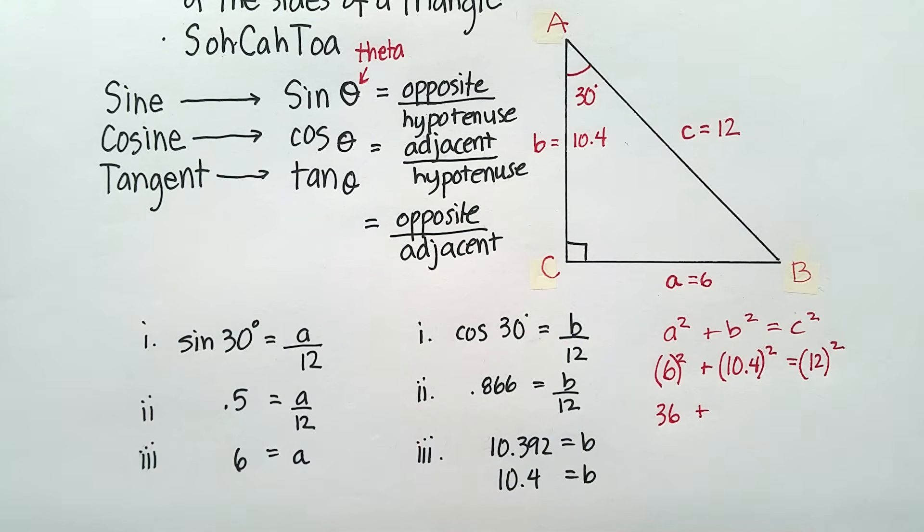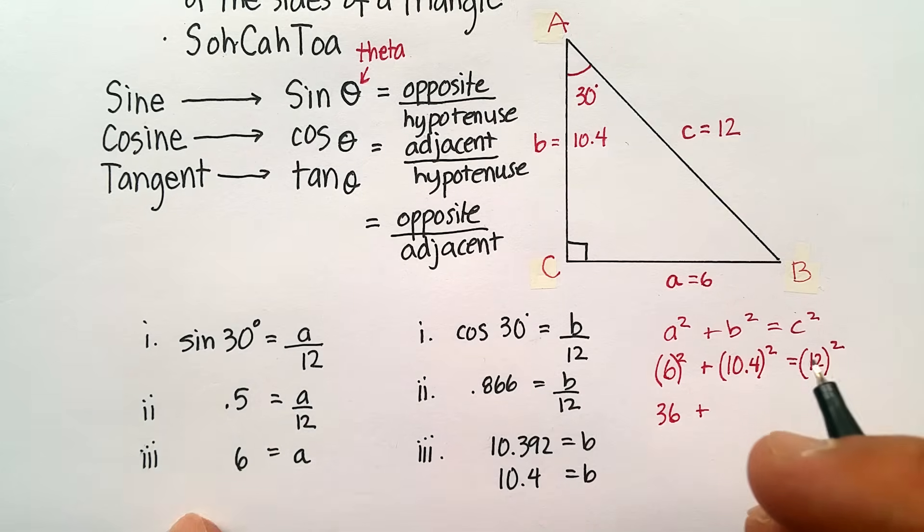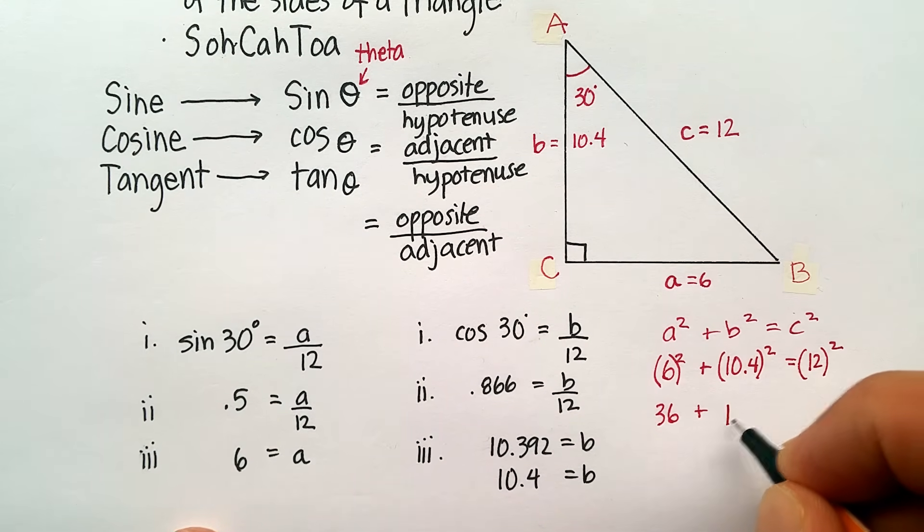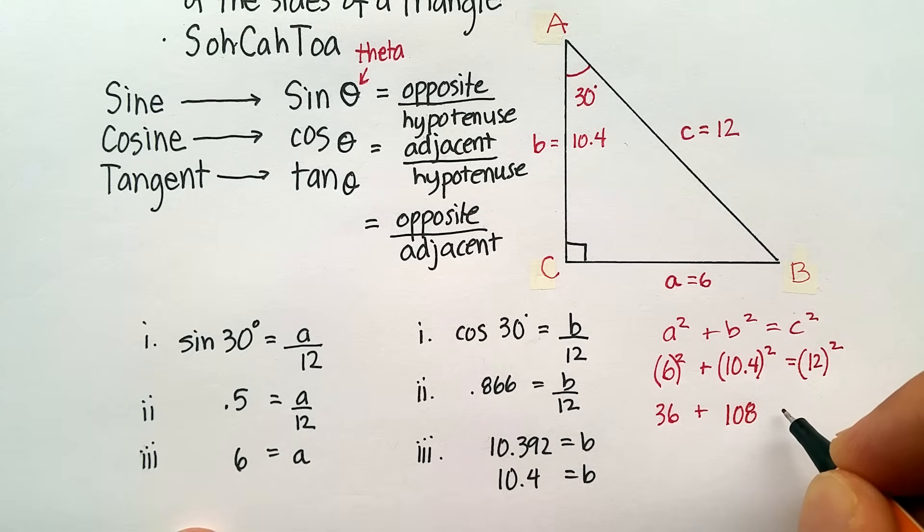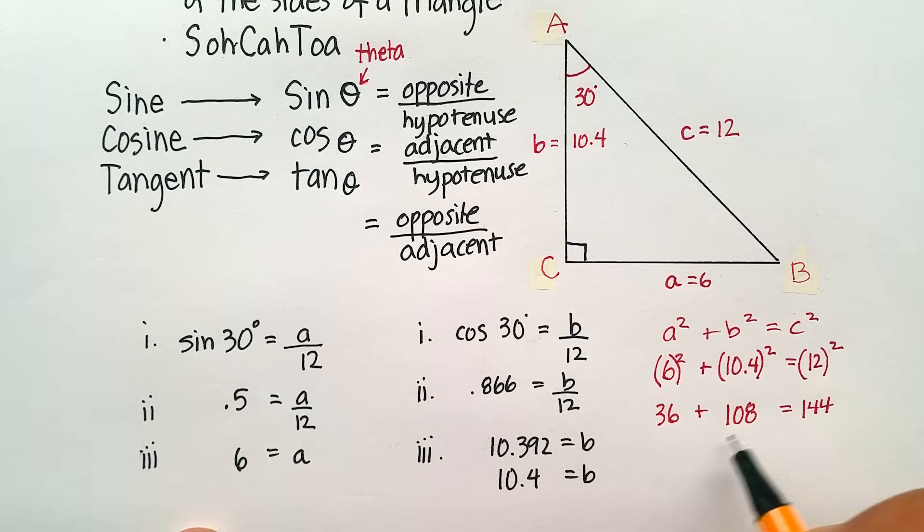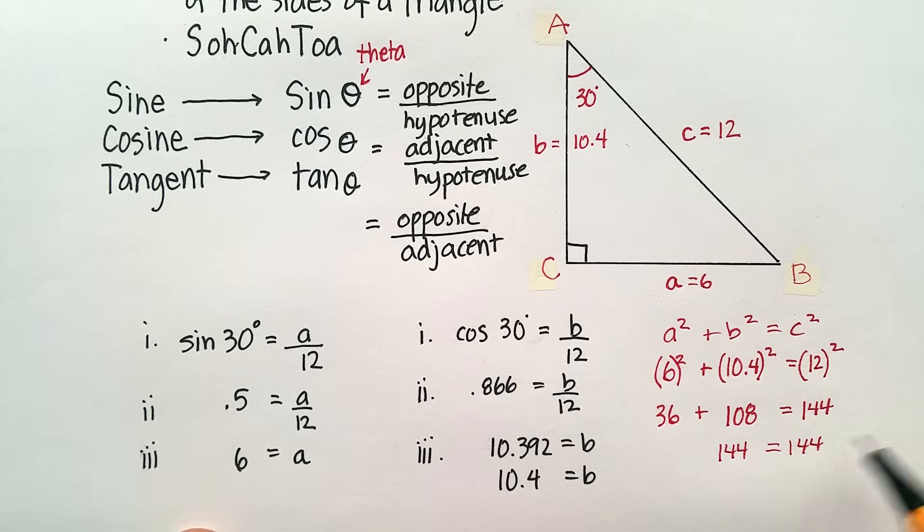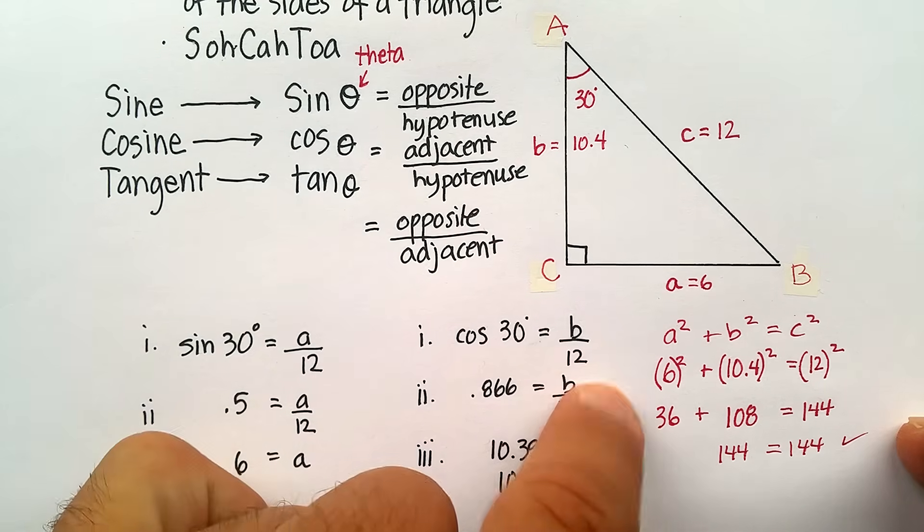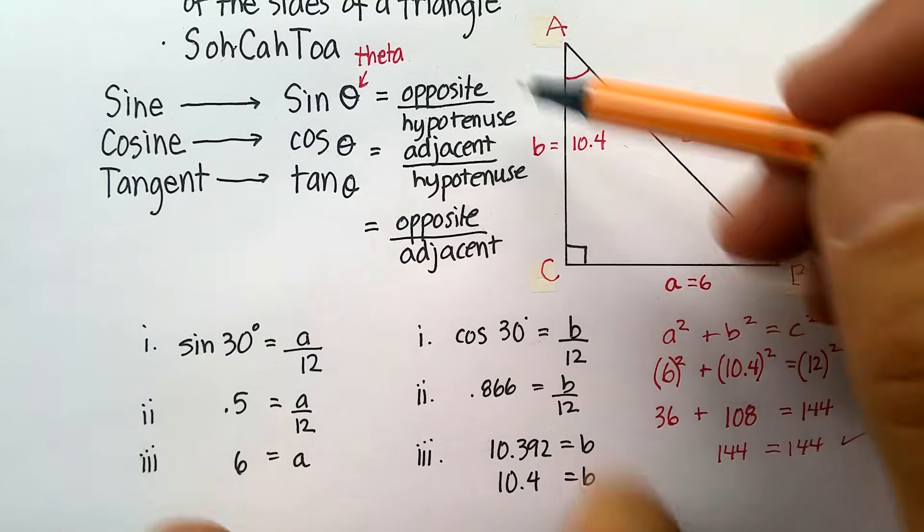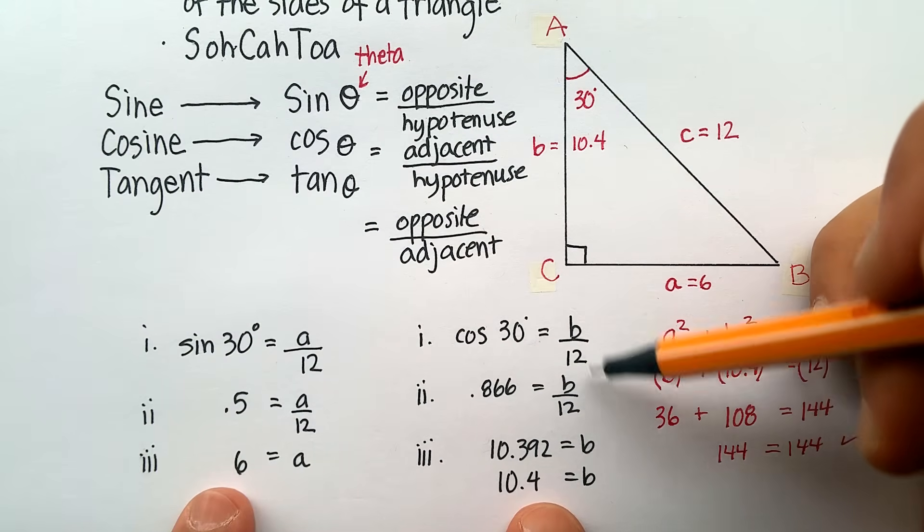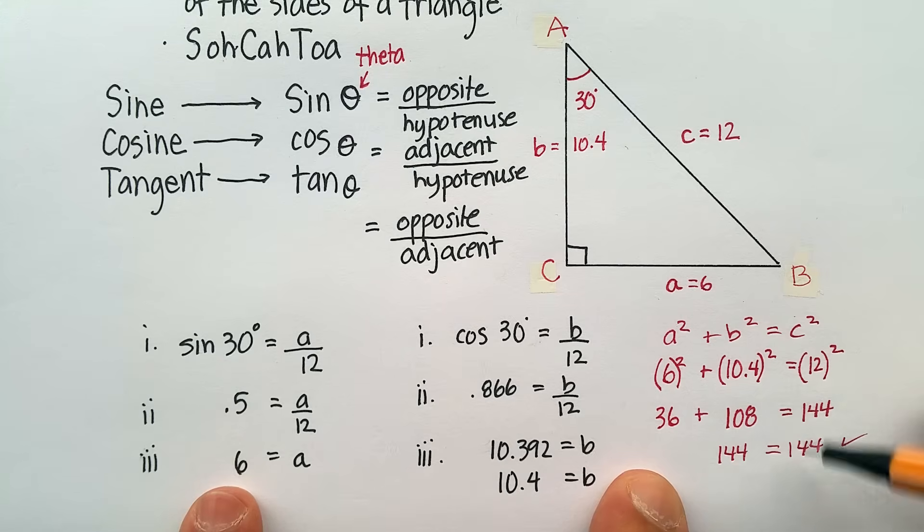I know that 10.4 squared is 108, approximately .1. And I know that 12 squared is 144. Is 36 plus 108, 144? Yes, it is. So what I have done here is I have actually just confirmed that my trigonometric functions worked, my ratios worked, and I confirmed it by using the Pythagorean theorem.